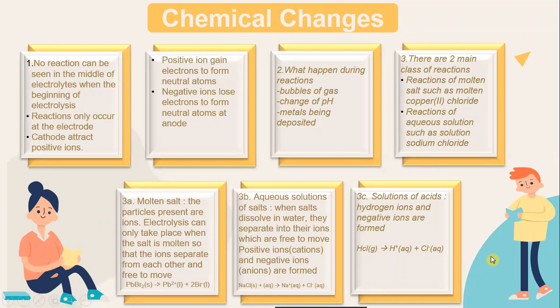Chemical changes: no reactions can be seen in the middle of the electrolyte at the beginning of electrolysis — reactions only occur at the electrodes. The cathode attracts positive ions; positive ions gain electrons to form neutral atoms. Negative ions lose electrons to form neutral atoms at the anode. What will happen during the reaction? You can see bubbles of gas, a change of pH, and metals being deposited. There are two main classes of reaction: reaction of molten salt such as molten copper chloride, and reaction of aqueous solution such as solution of sodium chloride.